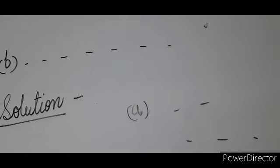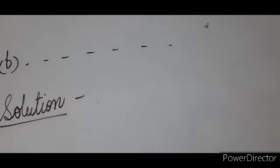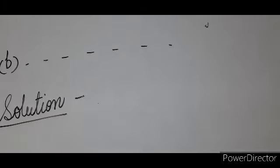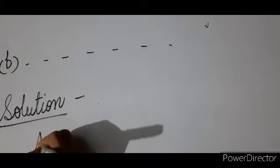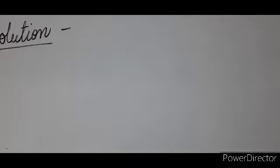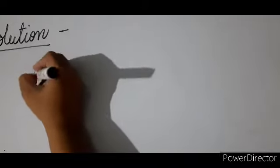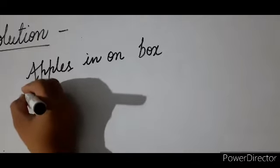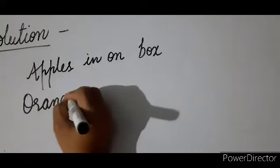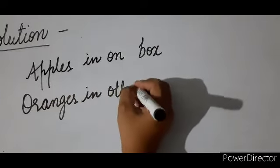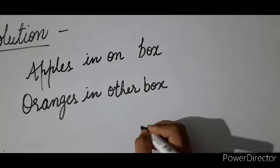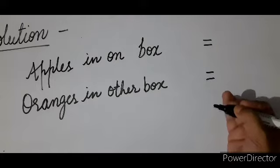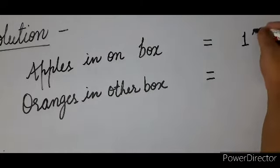Note down question number B from the book. After writing the question, next line, put the heading 'Solution' and then start writing the statement: 'Apples in one box' — leave space — then next line: 'Oranges in other box'. Put equal sign one below the other. How many apples? That is 1186.